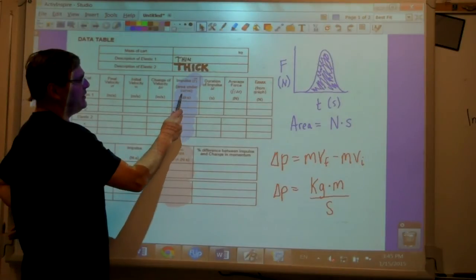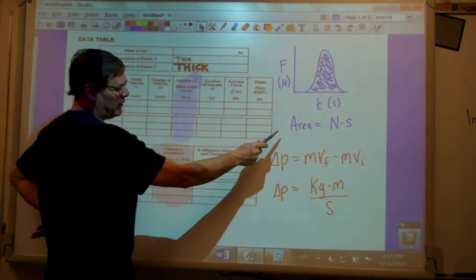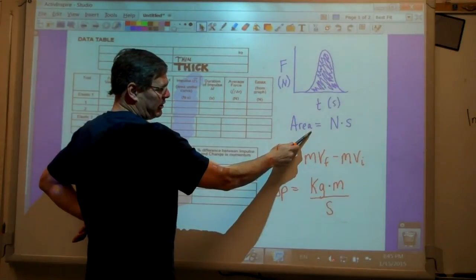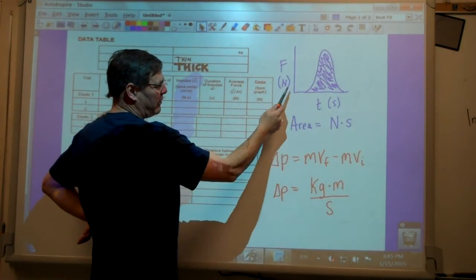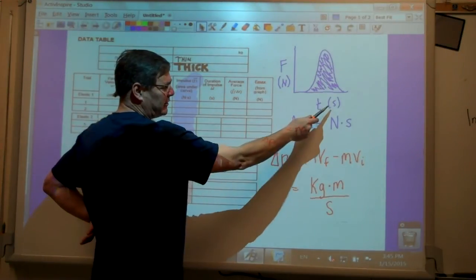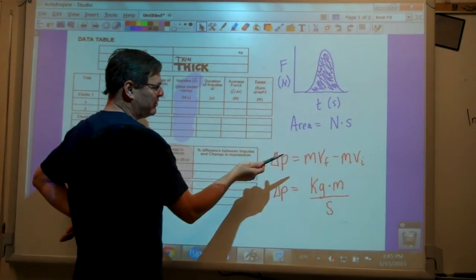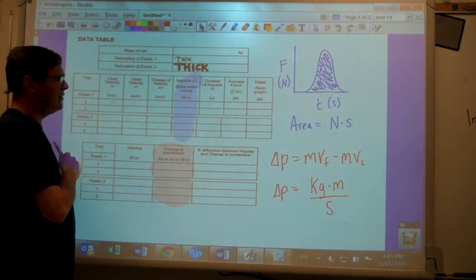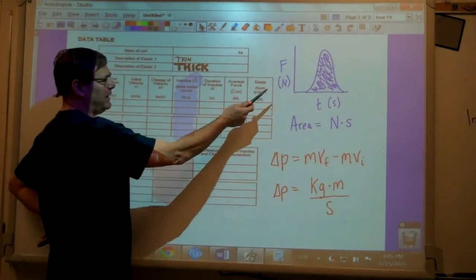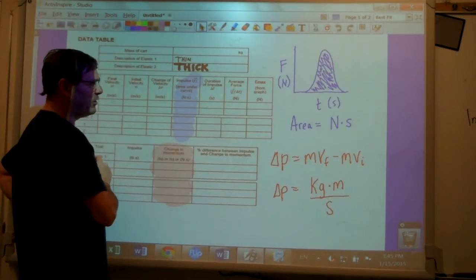Where you see units of newtons times seconds, that means you're going to use the area under the curve. Because the area under the curve is newtons on the y-axis, seconds on the x-axis. So the area is the product of newtons and seconds. When you see those units, newtons seconds, you know you're getting that information from the force graph.